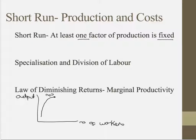Think about it in terms of a pub: if you had a lot of bar staff and a certain size of bar, adding more bar staff would increase the number of drinks you can serve, but at a certain point the bar staff will be getting in each other's way — they might not have enough taps to pour from. From the addition of more workers you just become less and less productive, and that's when your marginal productivity starts to fall. This is the law of diminishing returns. Specialisation and division of labour explain why marginal productivity initially increases, and the law of diminishing returns explains why it will eventually decrease. That is short run production theory.